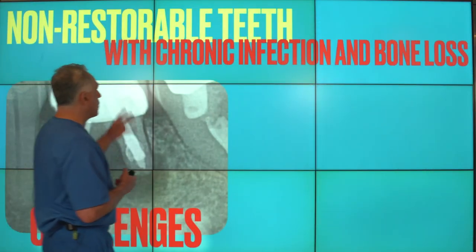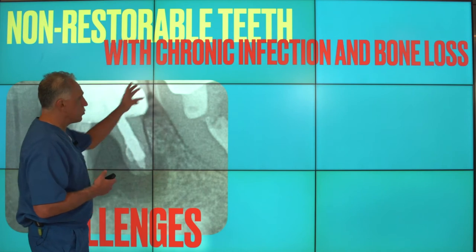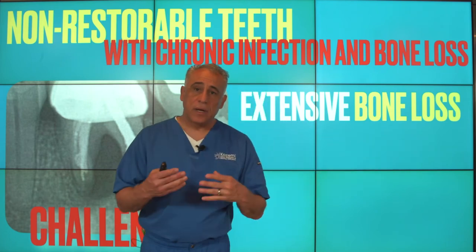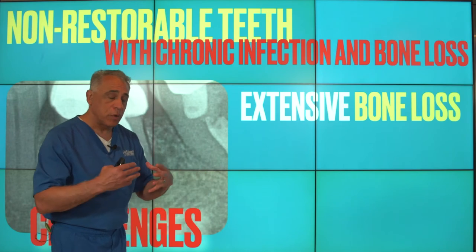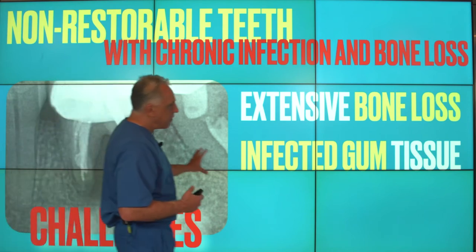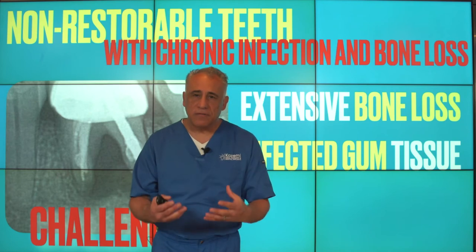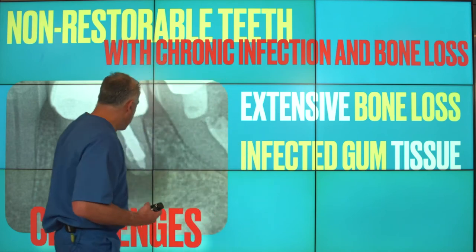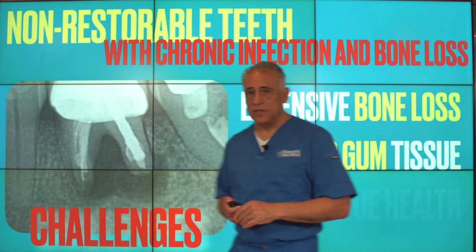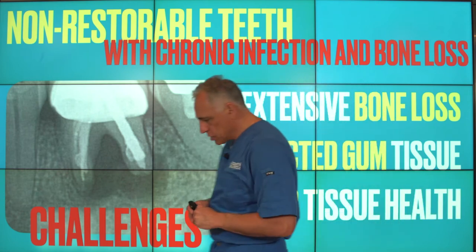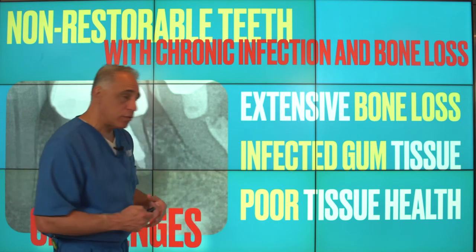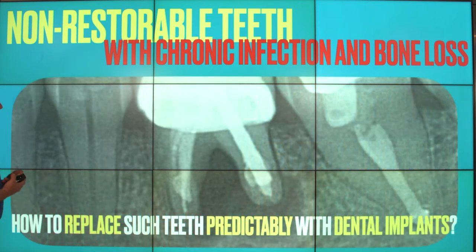What are the challenges when it comes to such circumstances — teeth with chronic infection and bone loss? We have an extensive amount of bone loss to address in replacement of the tooth and restoration of the bone so we can replace it with an implant in the future. The second challenge is having infected gum tissue, which is vital in the healing of the socket and the reparative process of such defects. Both of these result in poor tissue health, a poor biological environment for the ridge and for healing.